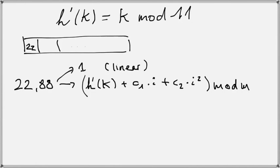If we're using quadratic probing, then h(k,i) is the ordinary hash function plus some constant times i plus another constant times i squared mod m, which is mod 11 in this case.